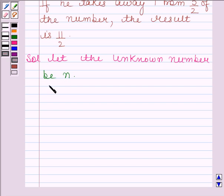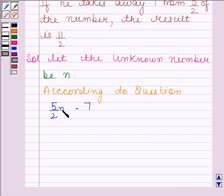According to the question, Anwar takes away 7 from 5 by 2 of this unknown number, that is 5 by 2 N. And I am taking away 7 from 5 by 2 N,